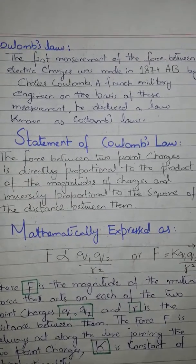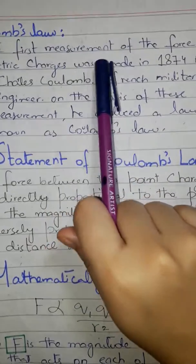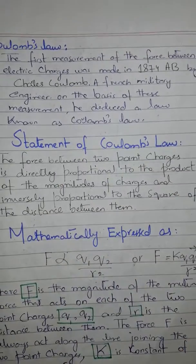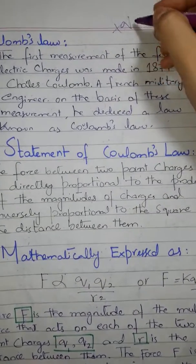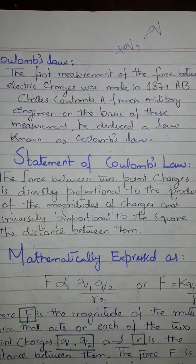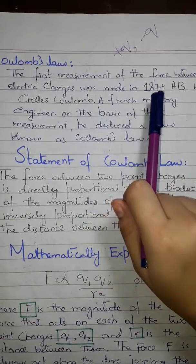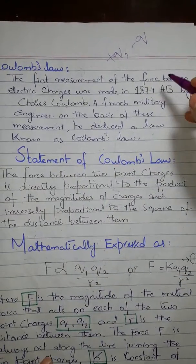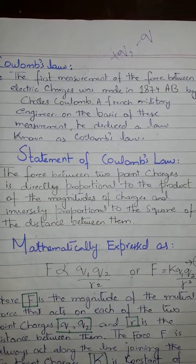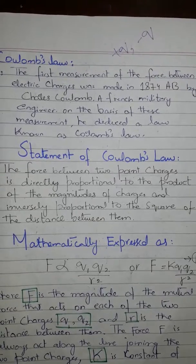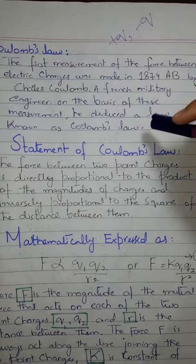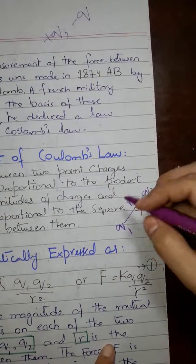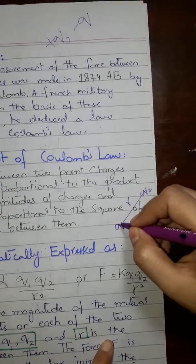The first measurement of the force between electric charges — which may be positive or negative — was made in 1874 by Charles Coulomb, a French military engineer. On the basis of these measurements he derived a law known as Coulomb's Law.